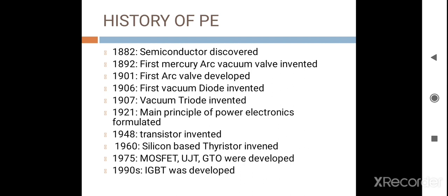In 1975, MOSFET, GTO, and other power semiconductor devices were developed for different applications. And after the 1990s, IGBT was developed, which is widely used in different applications.